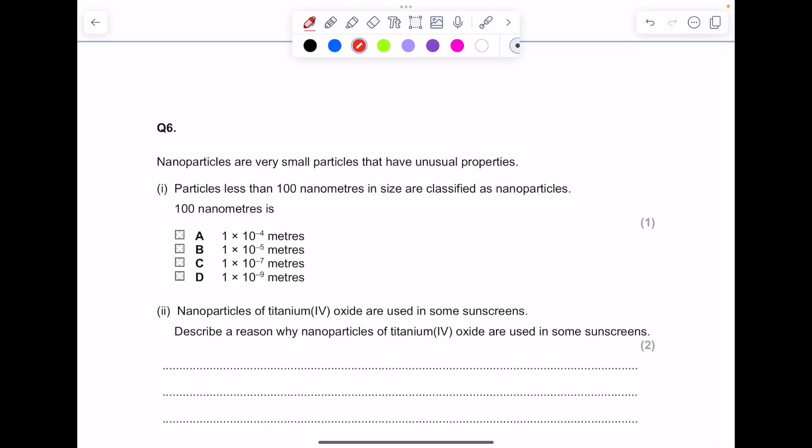Nanoparticles are very small particles that have unusual properties. Particles less than 100 nanometers in size are classified as nanoparticles. 100 nanometers is, so I said that one nanometer is the equivalent of 1 times 10 to the minus 9 meters, so if you've got one that's 100 nanometers, it's 100 times 10 to the minus 9 meters, but we need that in standard form, so that becomes 1 times 10 to the minus 7.